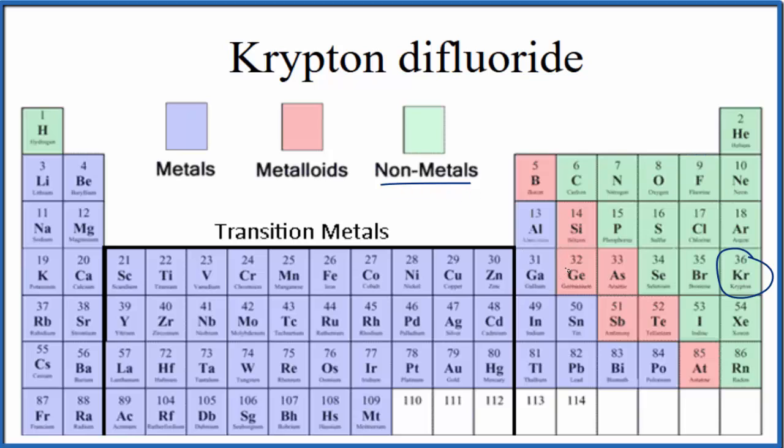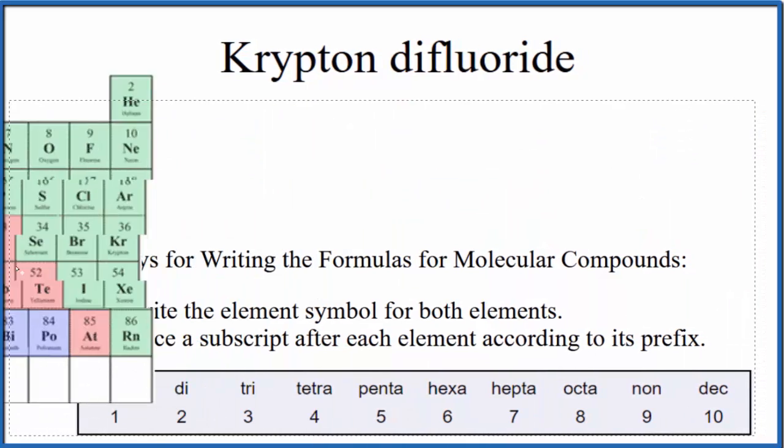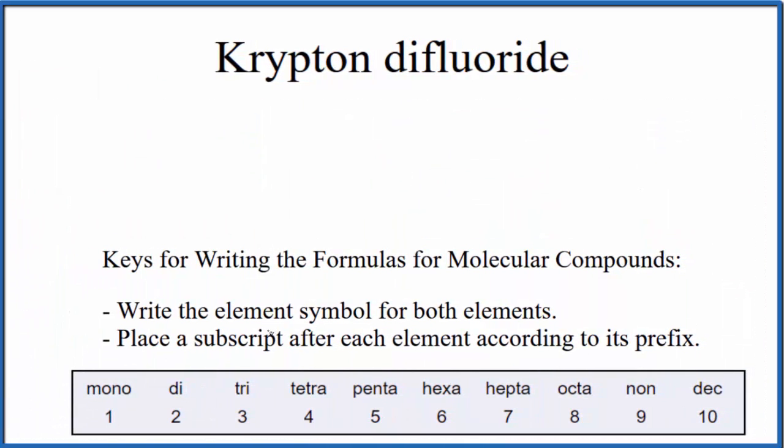So two nonmetals means that we'll have a molecular, also called a covalent compound. So we're going to use these rules here to write the formula.